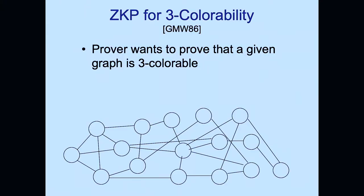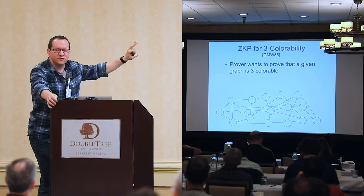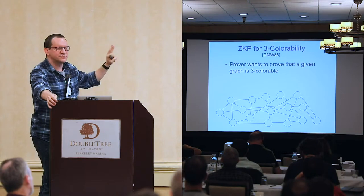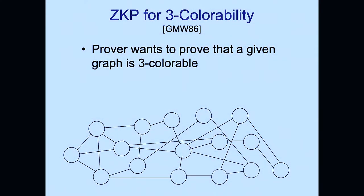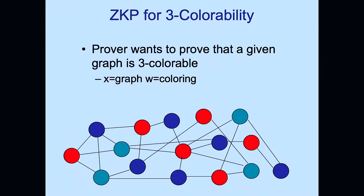These initial constructions were very inefficient both in terms of rounds and communication. The high-level idea is reducing the zero-knowledge functionality to an NP-complete problem: deciding whether a graph is three-colorable, i.e., whether you can color the nodes red, blue, and green so that no adjacent nodes share the same color. The prover's secret witness is the coloring of the graph.